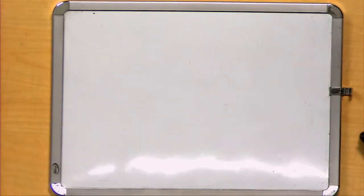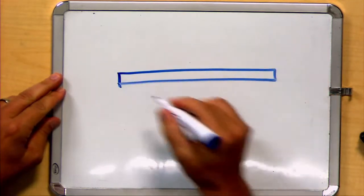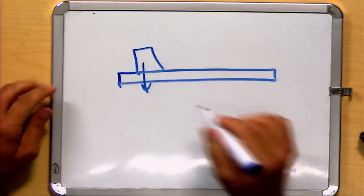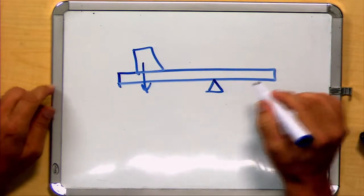When we were introduced to moment, we considered a force, for example, the force on a seesaw, applied at some distance from some axis point.